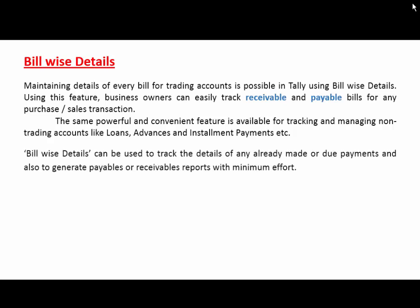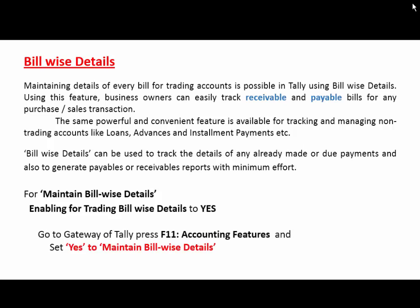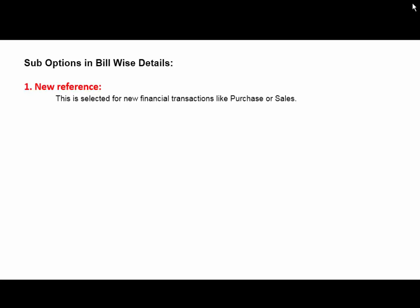Billwise Details can be used to track the details of any already made or due payments, and also to generate payable or receivable reports with minimum efforts. For maintaining Billwise Details, enable trading Billwise Details to Yes. Go to Gateway of Tally, press F11 Accounting Features, and set Yes to maintain Billwise Details. After that, when you are making journal entries in your voucher for purchase, sales, or any payment receipt voucher, some types of references are available.